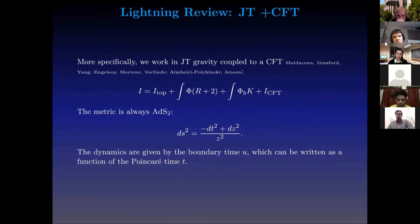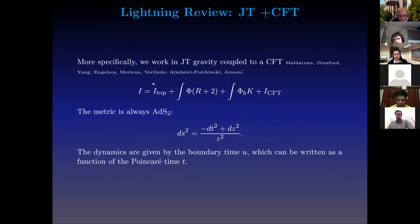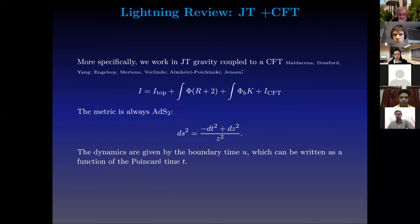A lightning review of JT coupled to conformal matter. We work with this model: the action of JT gravity coupled to a CFT. To be explicitly clear, the CFT is not the CFT that lives on the boundary — this is not 0+1 dimensional. This is a 1+1 dimensional CFT that lives in the bulk. The action has a topological term, then the dilaton dynamics, and then the CFT action. This is in some sense a very boring theory geometrically — the metric is always ADS2. Here I've picked Poincare coordinates for ADS2. The dynamics of this theory are not given by the metric, but by the boundary particle, which is the boundary time U, which you can write as a function of the Poincare time T.